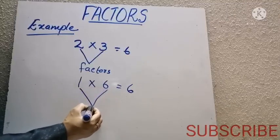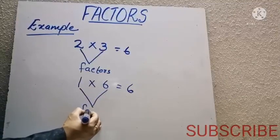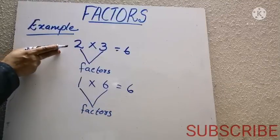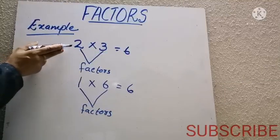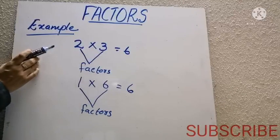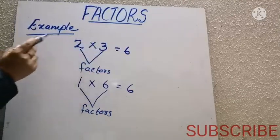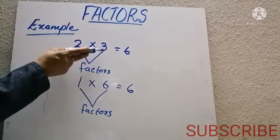So listen, what is meant by factors? The numbers that are multiplied to get the product. The numbers that are multiplied here are 2 and 3, so you got the answer 6.